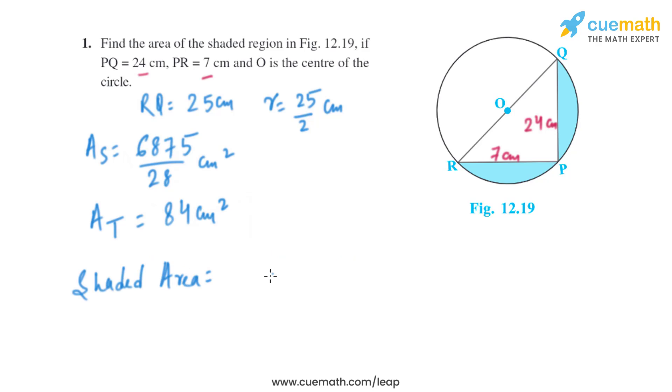Now on subtracting the area of triangle from the area of semicircle, we'll get the area of the shaded region. So it will be 6875 divided by 28 minus 84. On solving this, we'll get the shaded area as 4523 divided by 28 square centimeters.